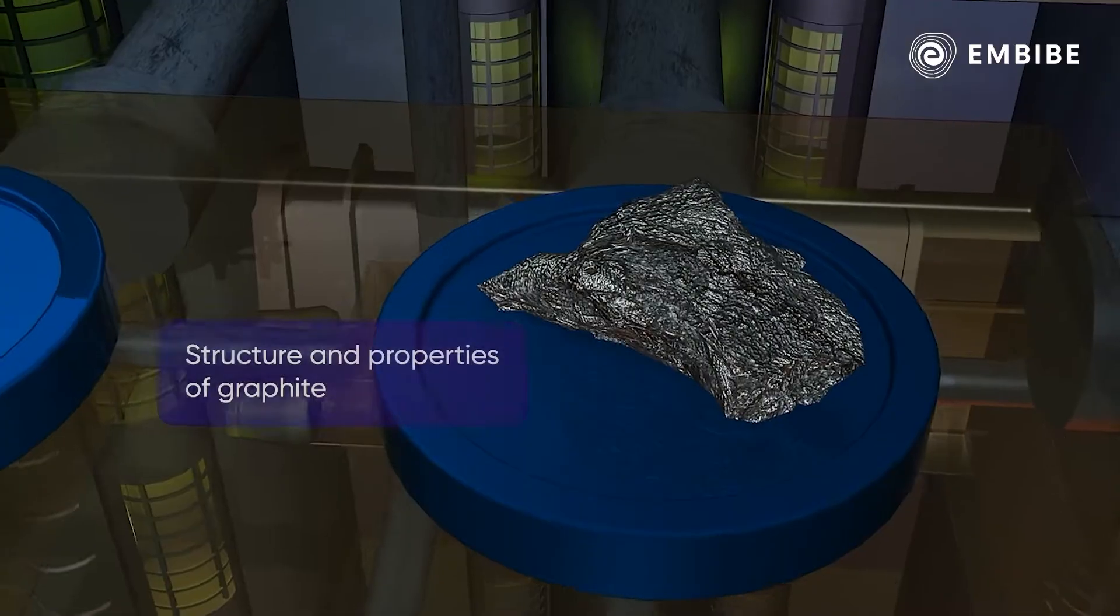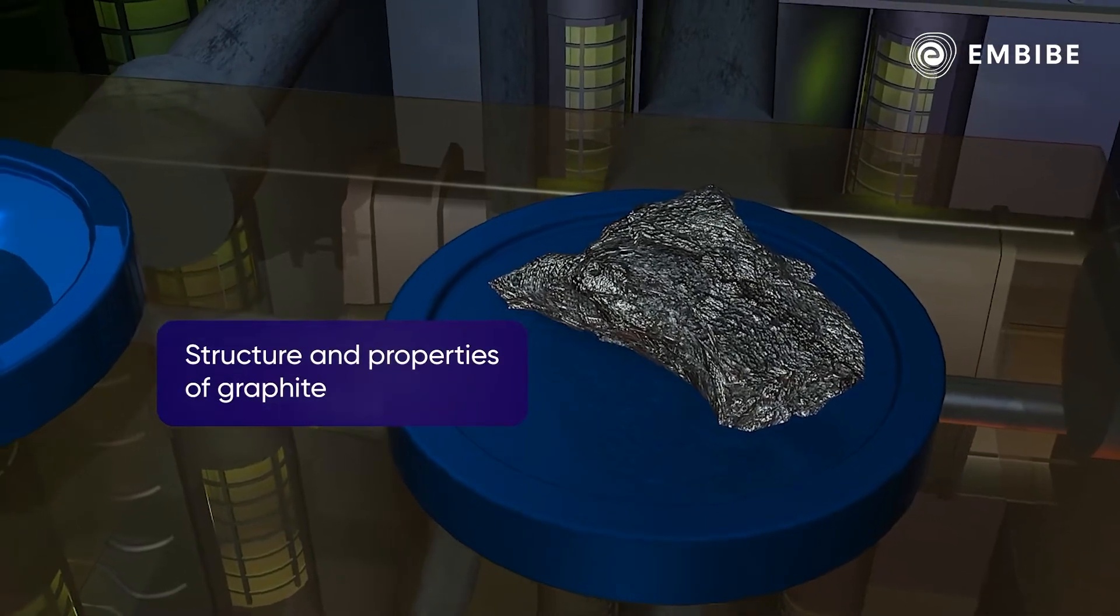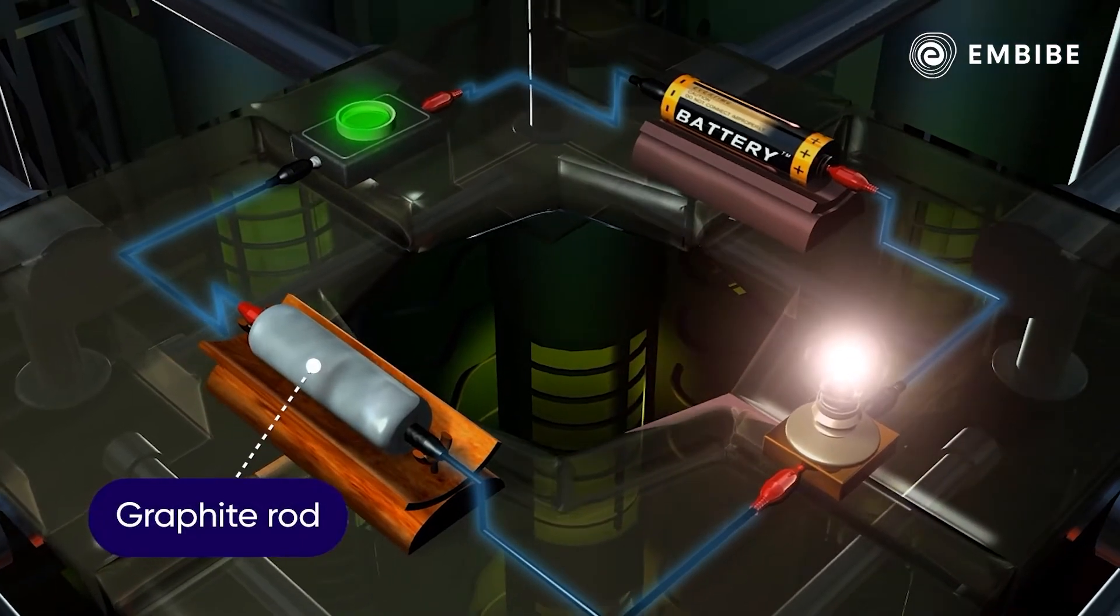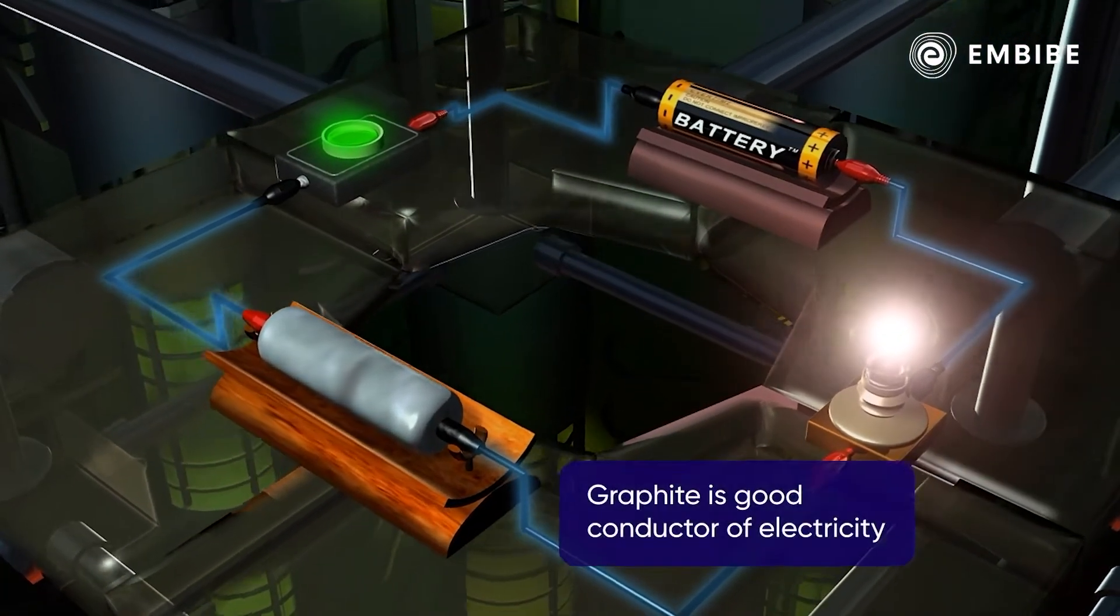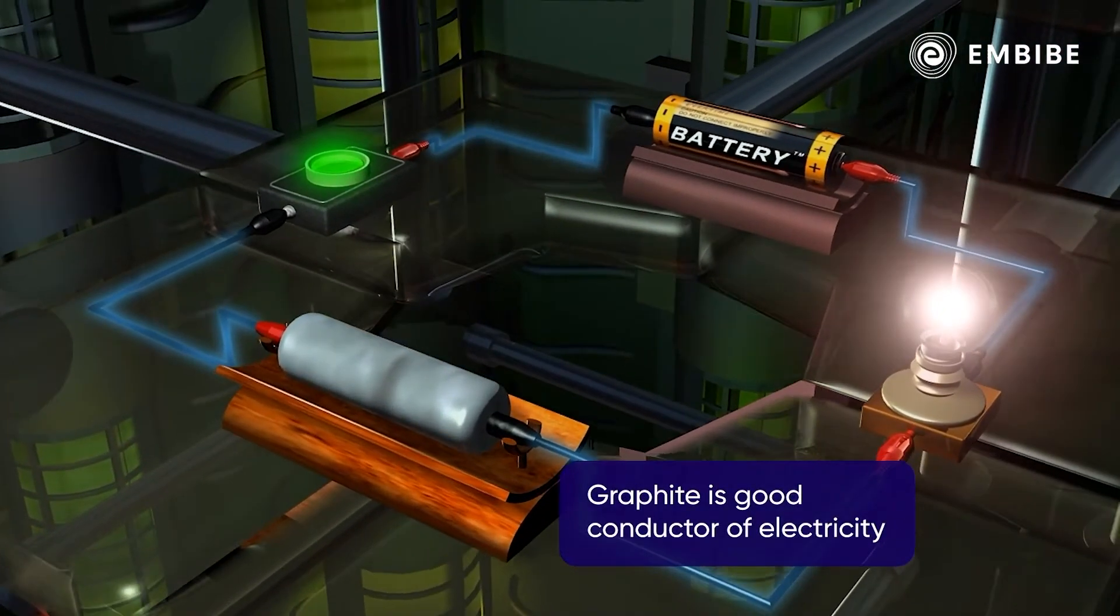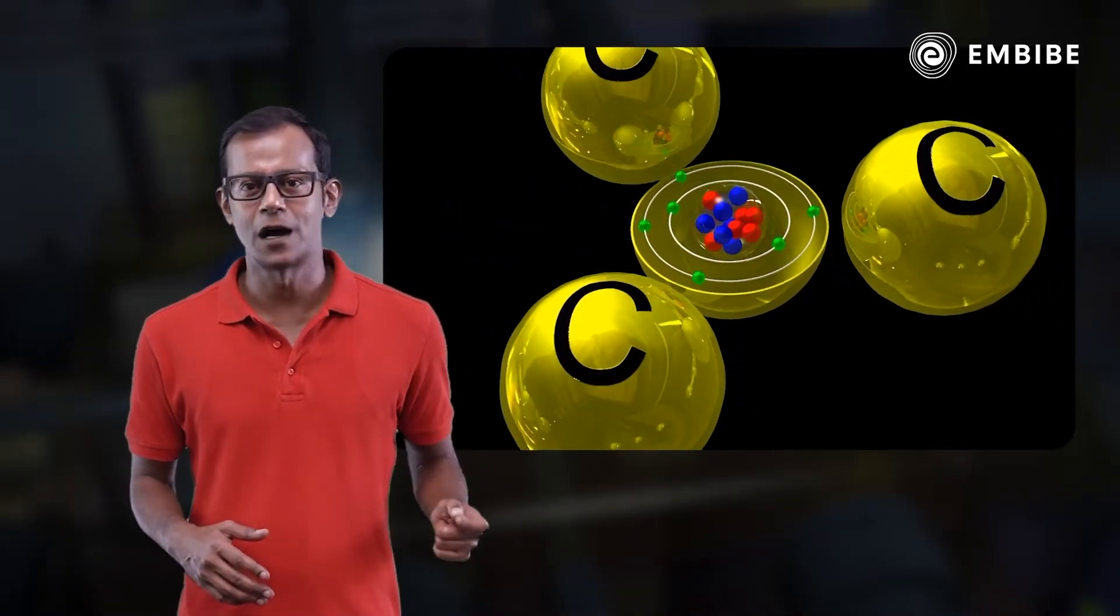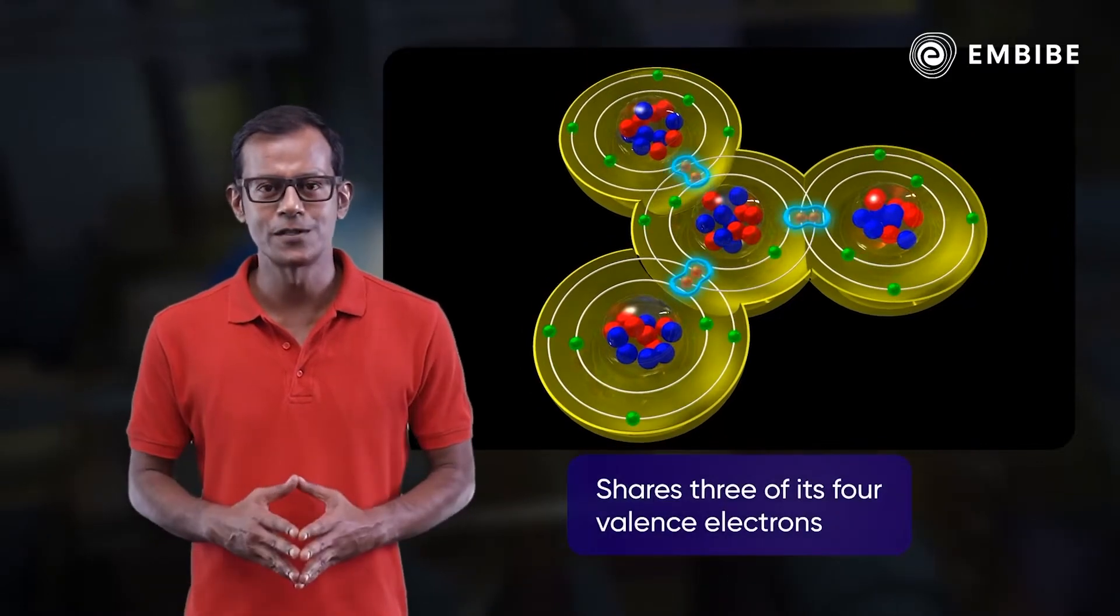Structure and properties of graphite: When an electric current is passed through a graphite rod, the bulb glows, indicating graphite is a good conductor. In graphite, out of the four valence electrons of carbon, it shares three electrons with three other carbon atoms while one electron remains free.